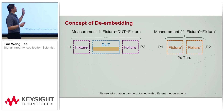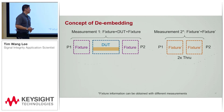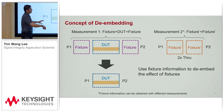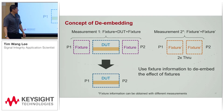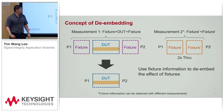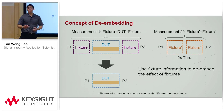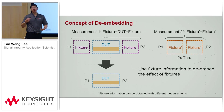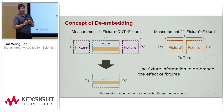Now you have information about the fixture, and you can use that fixture information to take out the effect of the fixtures. Like Mike mentioned, in the AFR family there are many different reference structures that you can get the fixture information from: 1x open, 1x short, and of course the classic 2x through.